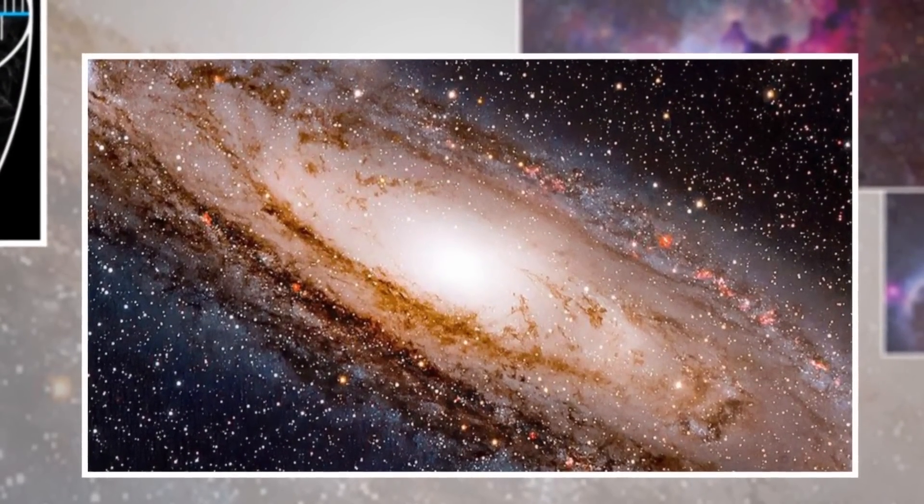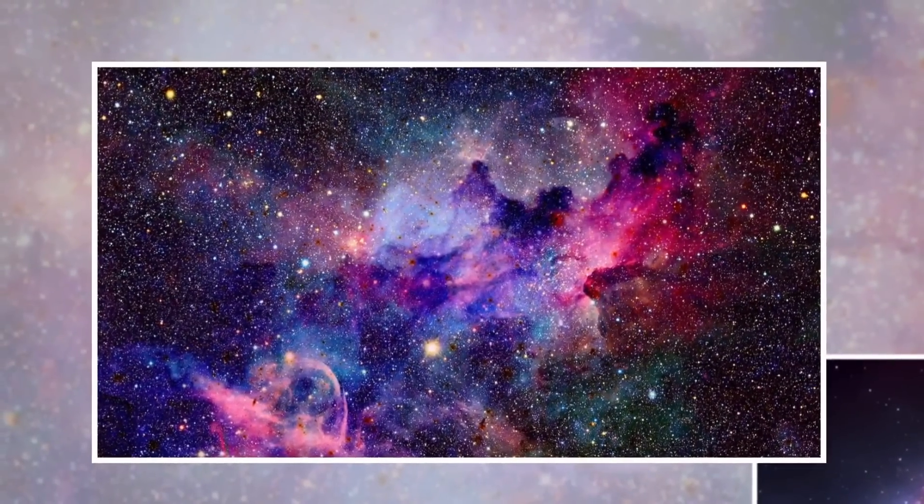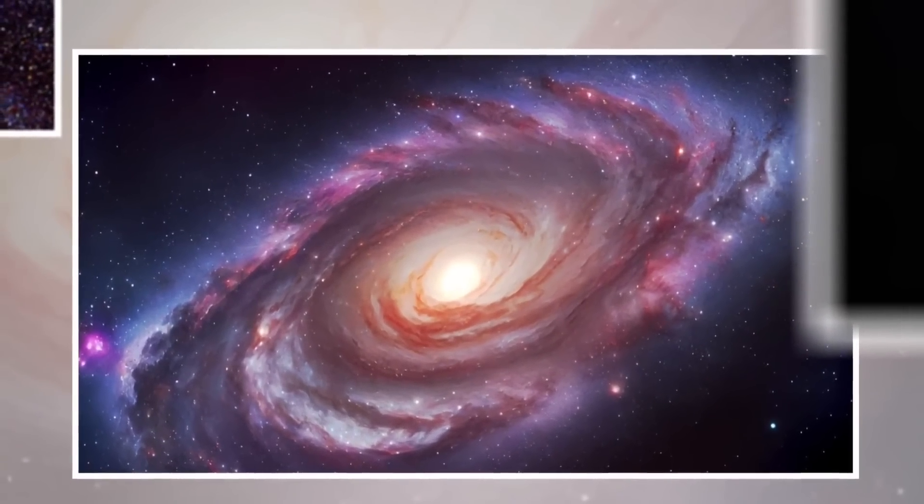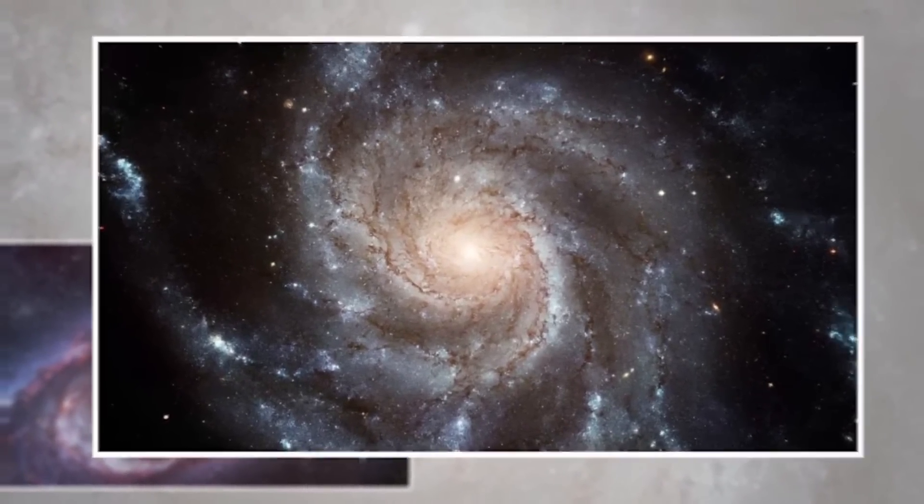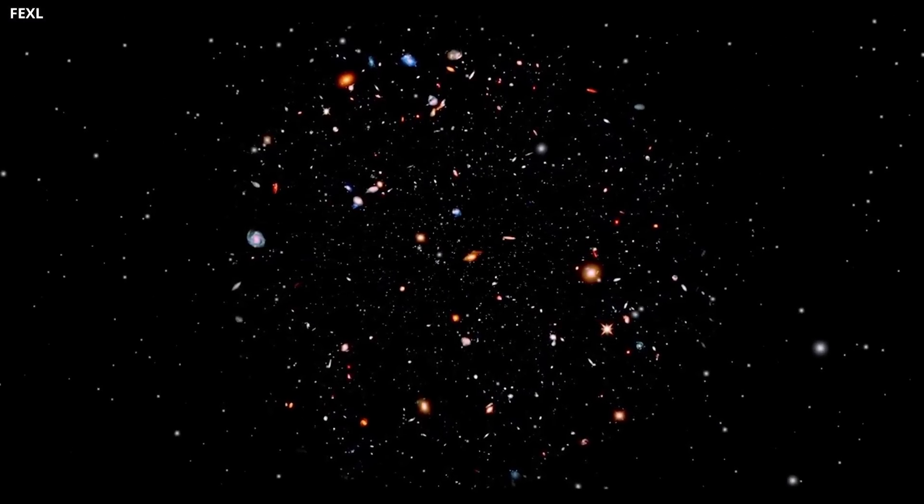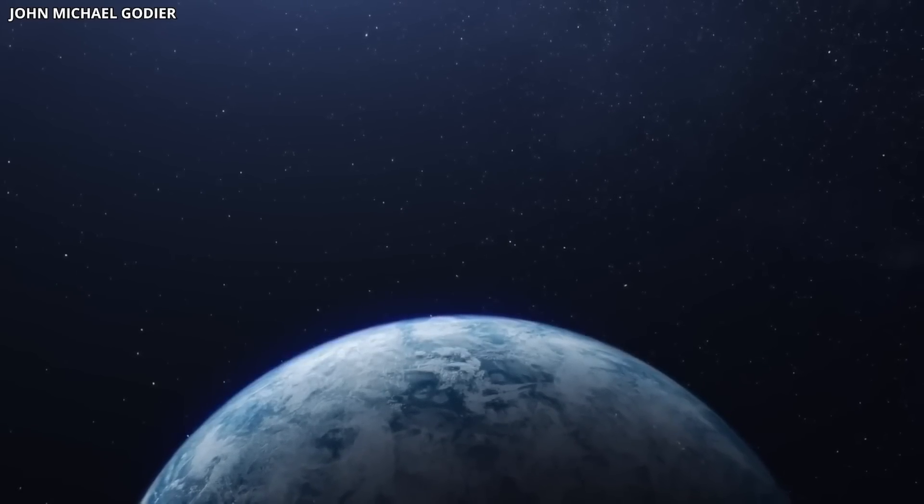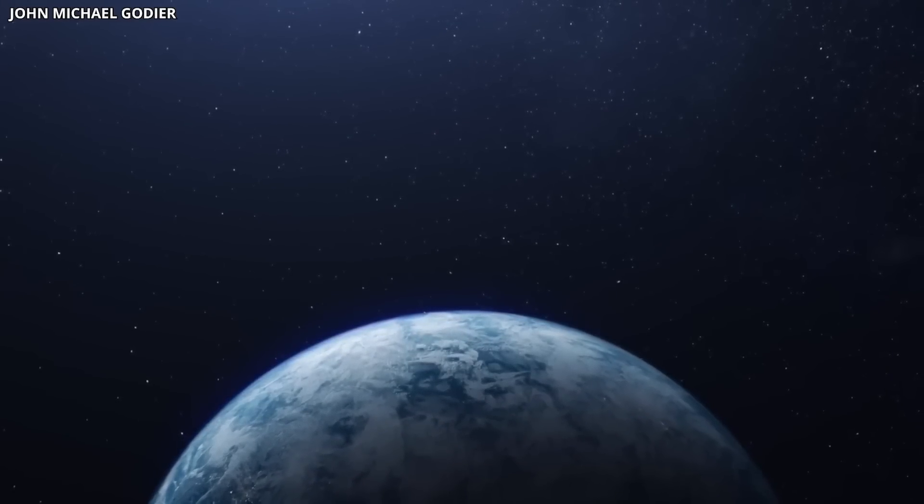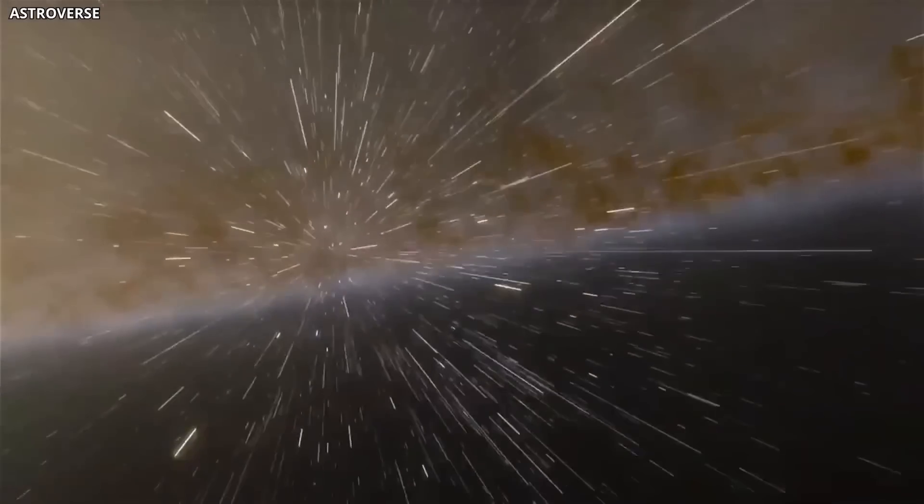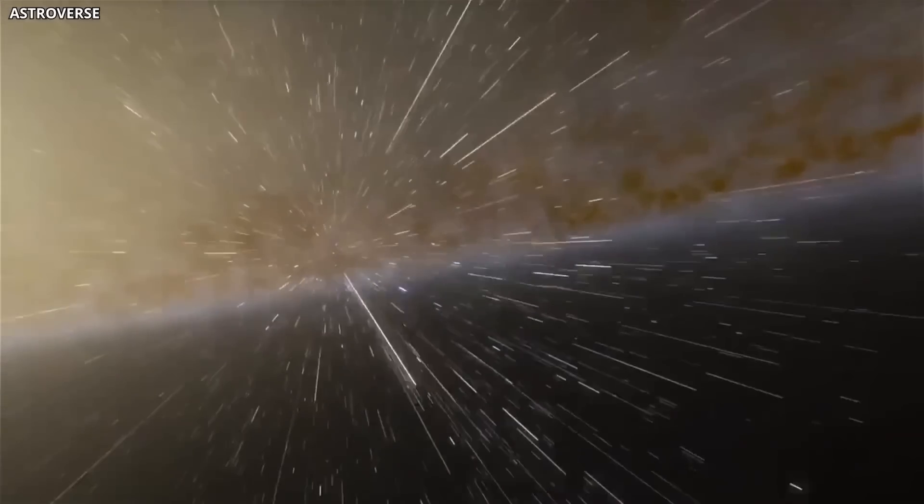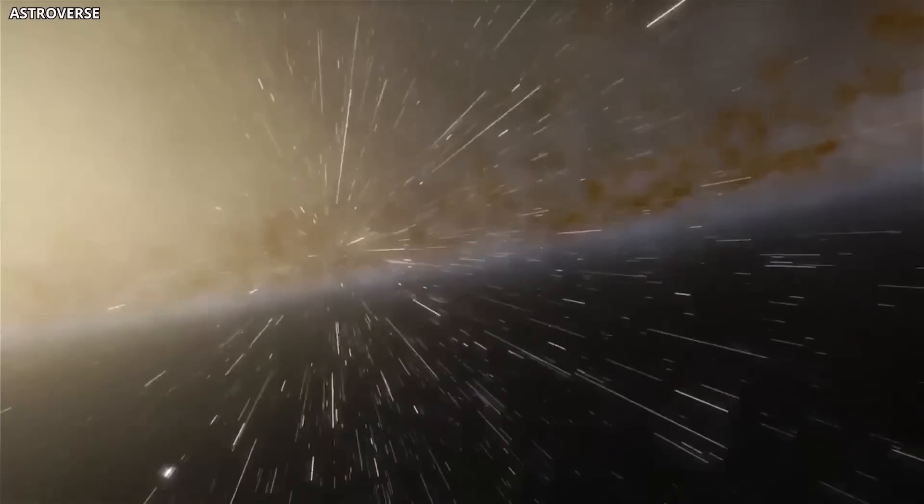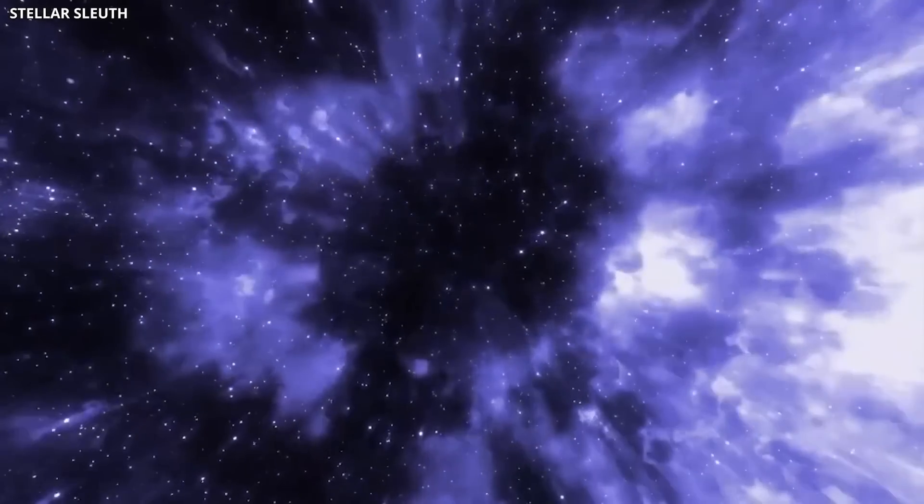The observable universe, spanning approximately 90 billion light-years in diameter, is home to at least 100 billion galaxies, each boasting 100 to 1,000 billion stars. Our recent discoveries have revealed that planets are remarkably common, with trillions and trillions of habitable planets likely existing in the universe.